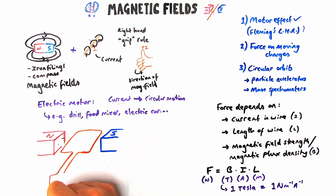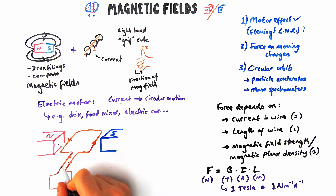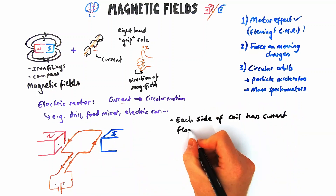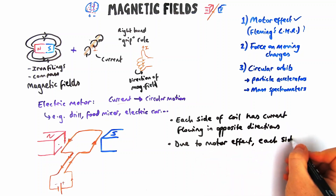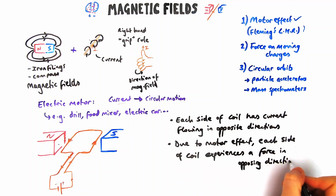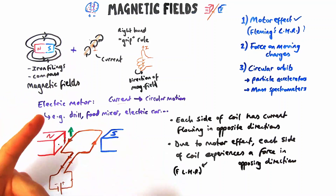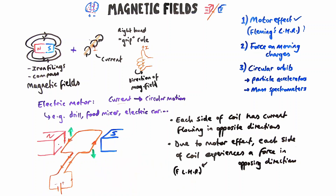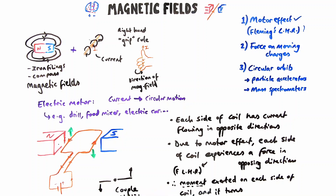We've got a coil of wire connected to a circuit with a cell, so current flows up the right-hand side and down the left-hand side. Because current flows in opposite directions on each side of the coil, each side experiences a force in the opposite direction due to Fleming's left-hand rule — one side moves up, the other moves down. This causes the coil to spin; the two opposite forces acting in the same rotational direction form what we call a couple.